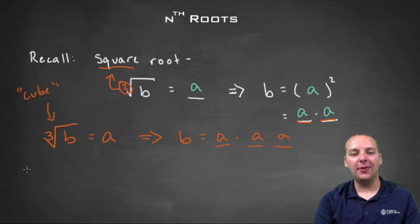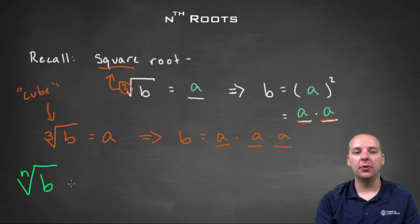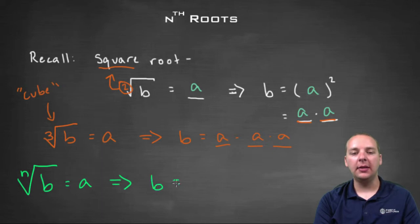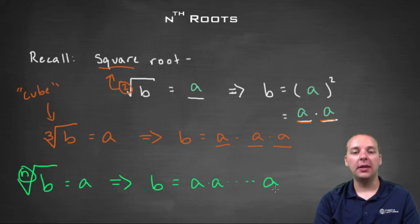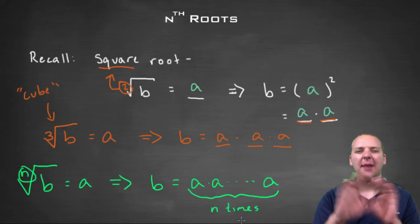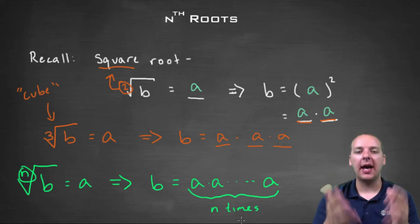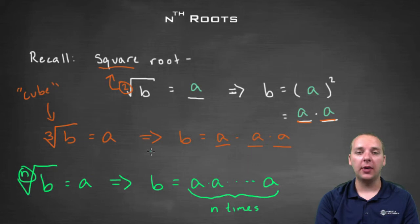In general, for an nth root — whether it's a fourth root, fifth root, sixth root, seventh root — equal to some value, the radicand b is obtained by multiplying a by itself n total times. That's all abstract, so let's do a couple of practical hands-on examples to make it clearer.